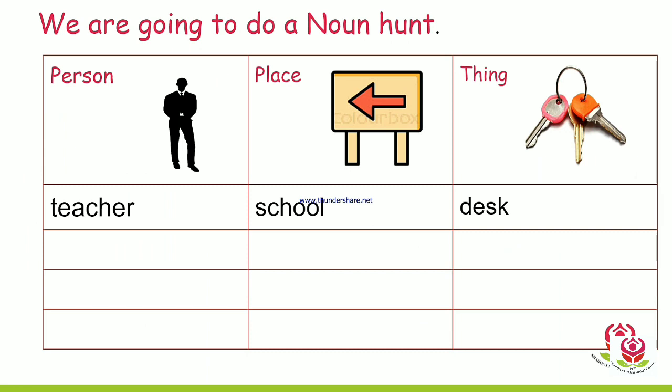Now, children, you have some tasks. First, we are going to do a noun hunt. You can see columns with the headings: name of person, place, and thing. You will write words below teacher, school, and desk. I want you all to write five more examples in each column.